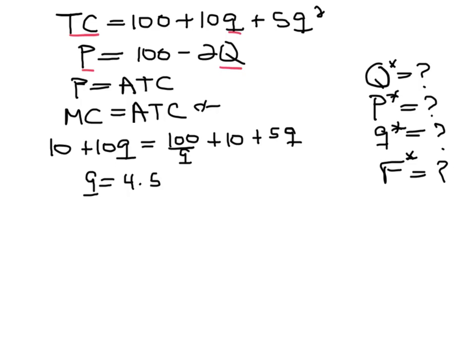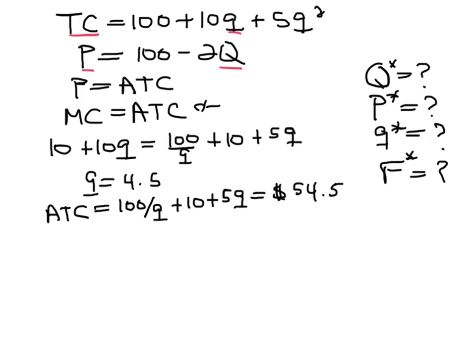Now that we have small Q, we can plug that back into our average total cost, which is 100 divided by Q plus 10 plus 5Q. If we plug Q in there, we find that the average total cost is actually 54.5, so about $55. We're already in good shape because the average total cost is a lot less than it was when we had 50 firms, which means we are to the left of the average total cost curve.